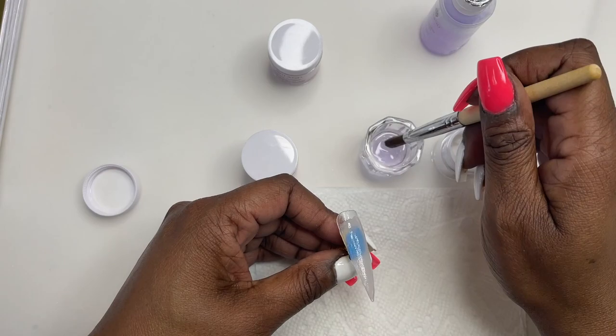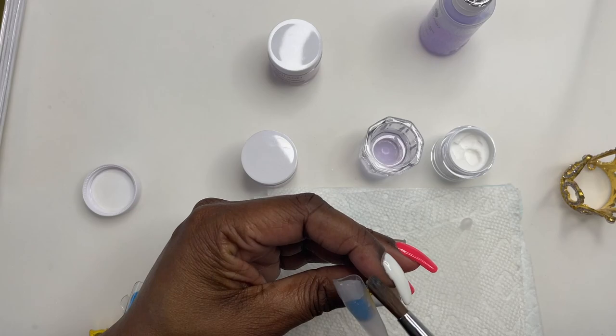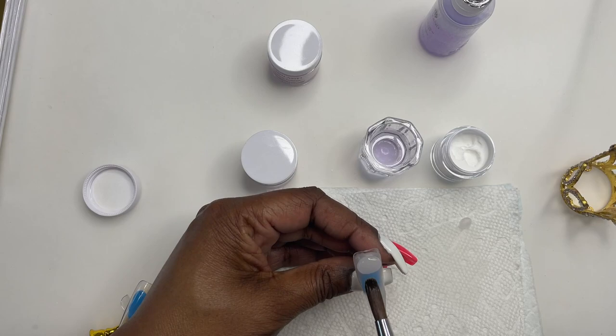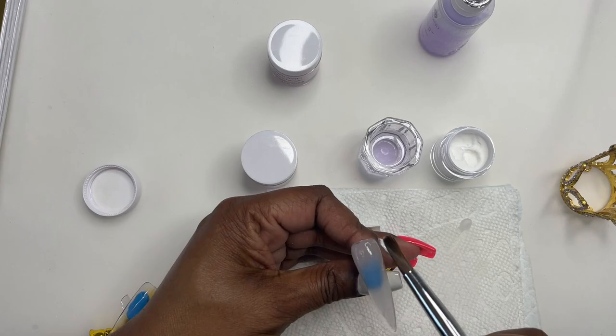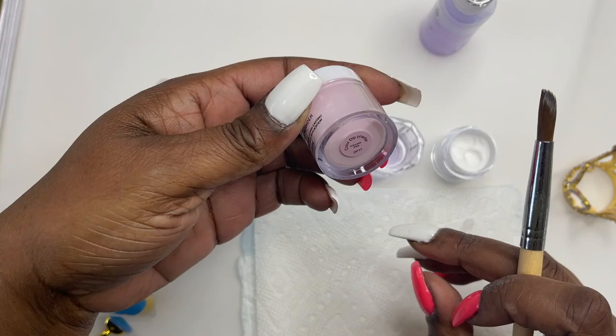The first thing that I noticed was the monomer had the worst smell. It smelled like monomer, but there was like a hint of something else in it. So it just smelled really, really bad. So I decided, I'm going to swatch all these colors. And then at the end, I'm going to soak off and just see how this product soaks off.